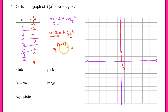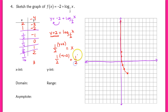When I plug in negative 3, I end up with (1/2) to the negative 1st power, so I get the point (2, -3). When I plug in negative 4, I end up with (1/2) to the negative 2nd power, which gives me 4 — so the coordinate is (4, -4). Now the points aren't nearly as close together, and I can assume the graph continues to grow in that direction.